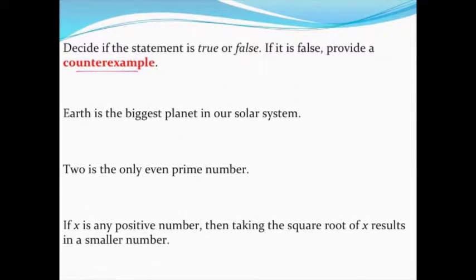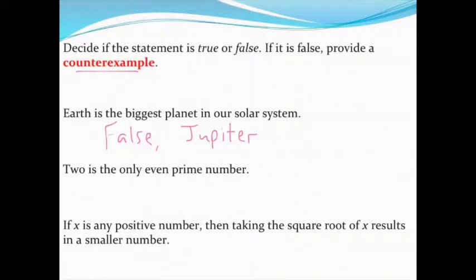Counterexamples are just proof that something is false. Take 'Earth is the biggest planet in the solar system' — that's false, and Jupiter is my counterexample since Jupiter is bigger than Earth. Next, 'two is the only even prime number' — I might try four, but four is not prime, or 100, but 100 is not prime. Any even number is divisible by two, so two is the only one that works. This is actually a true statement; I can't find a counterexample.